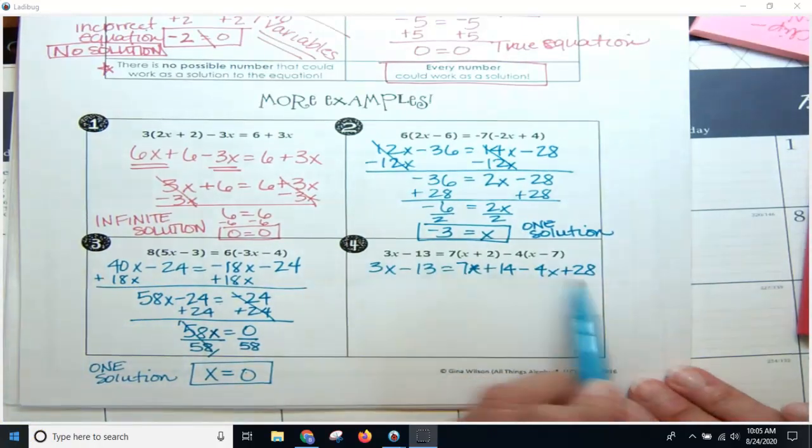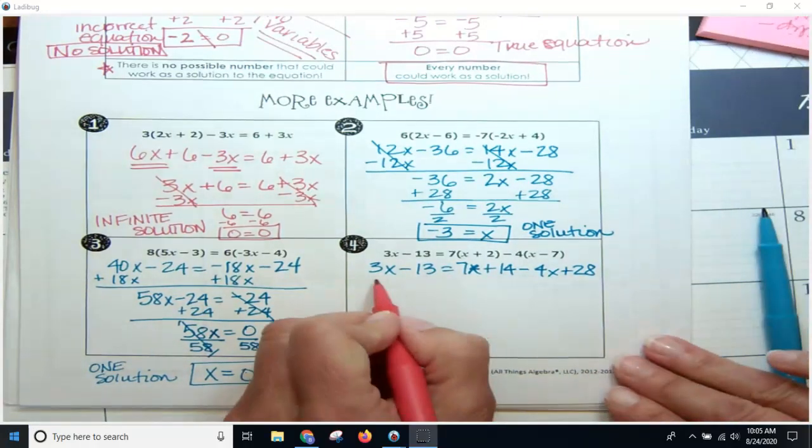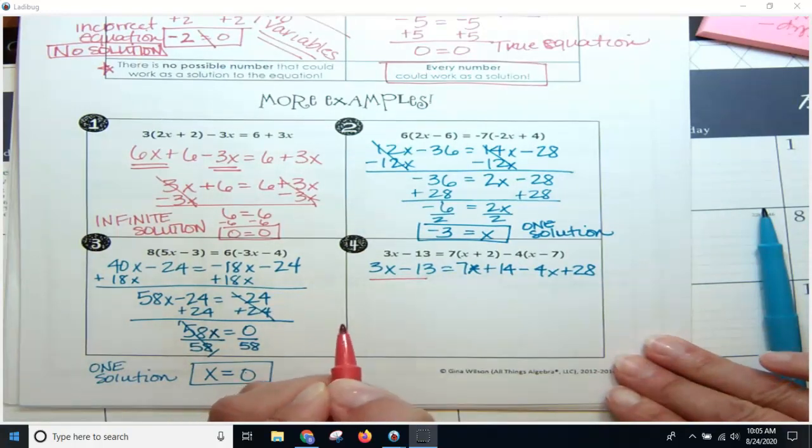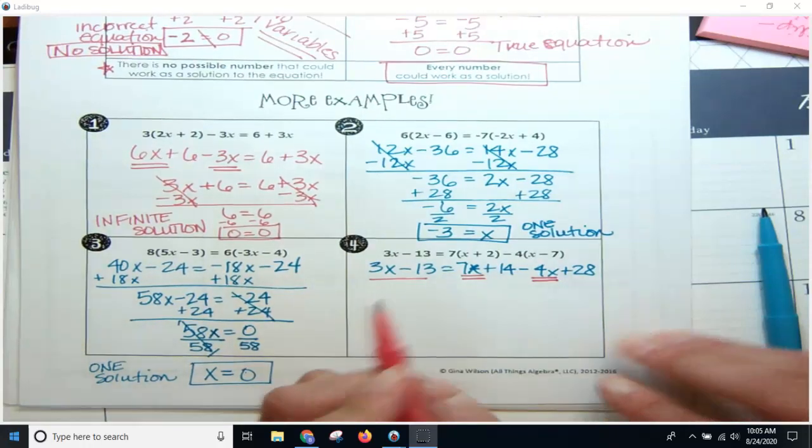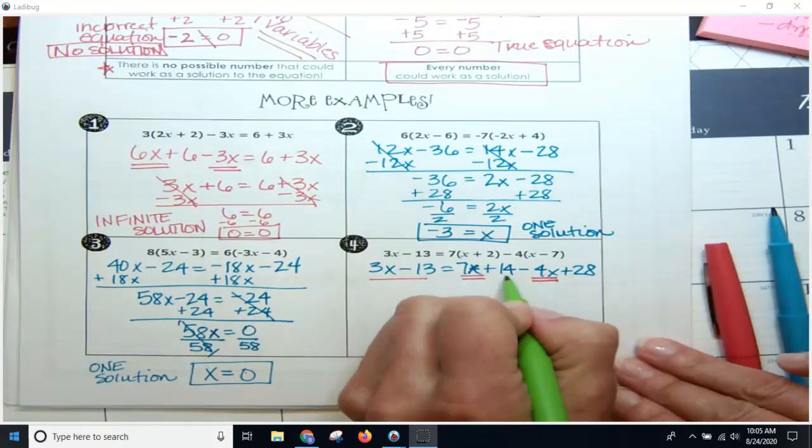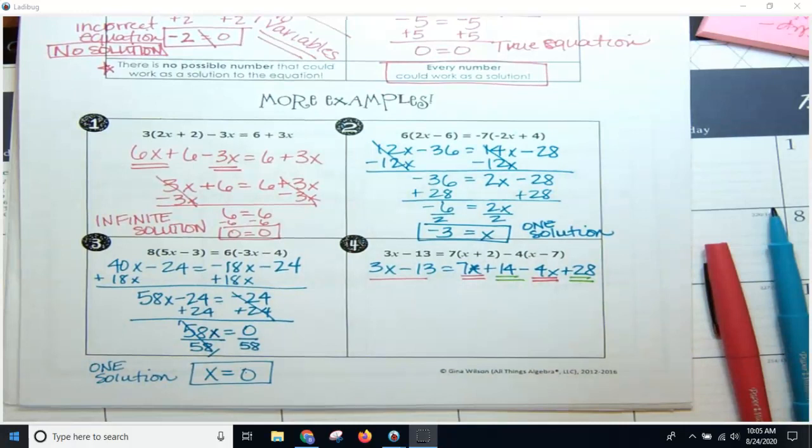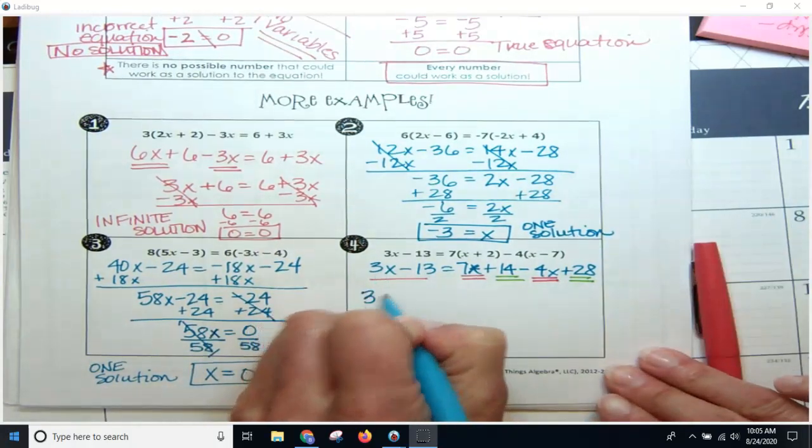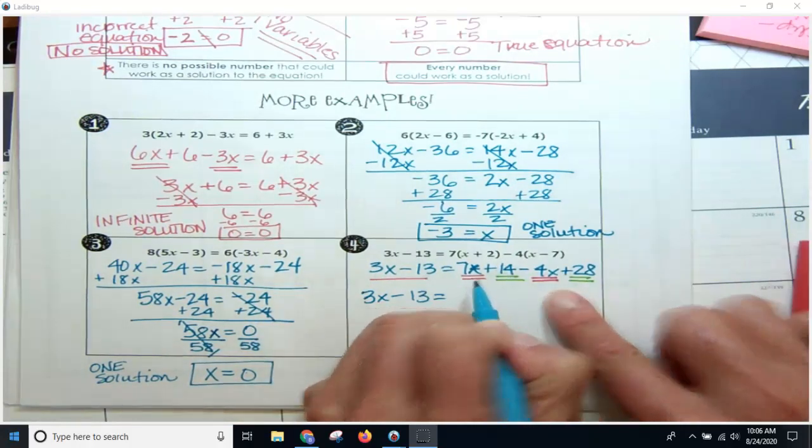So hopefully you got this. When you distributed, this has a lot of terms that need to be combined over here. There's nothing that needs to be simplified over here. You've got two terms with an x, so those need to be combined. And you've got two terms that are constants. So when I combine my like terms, I'm going to get 3x minus 13 equals 7x minus 4x is going to give me 3x, and 14 plus 28 is going to give me 42.